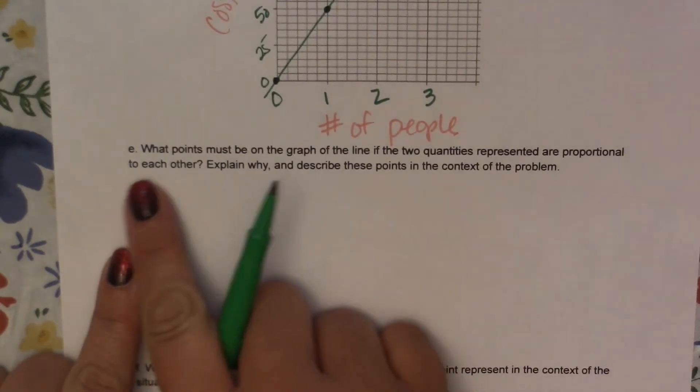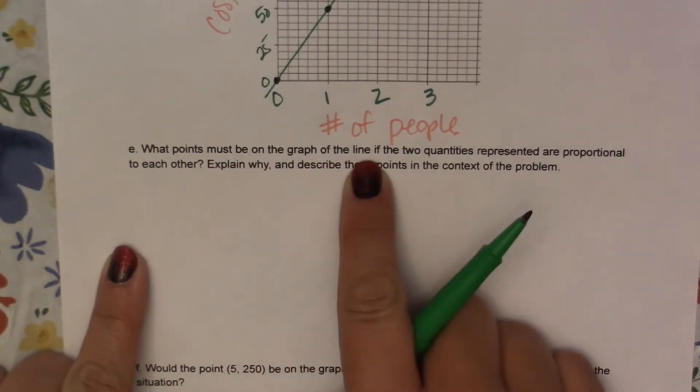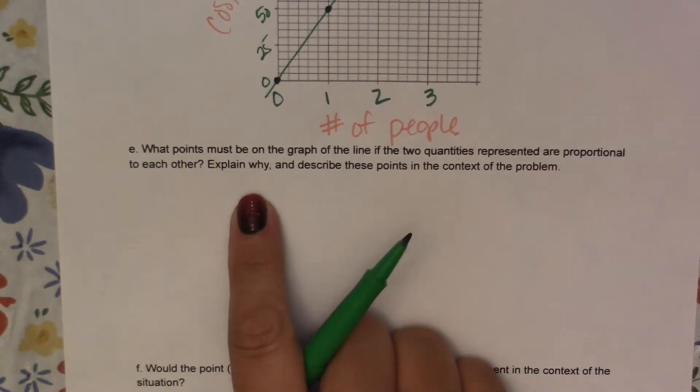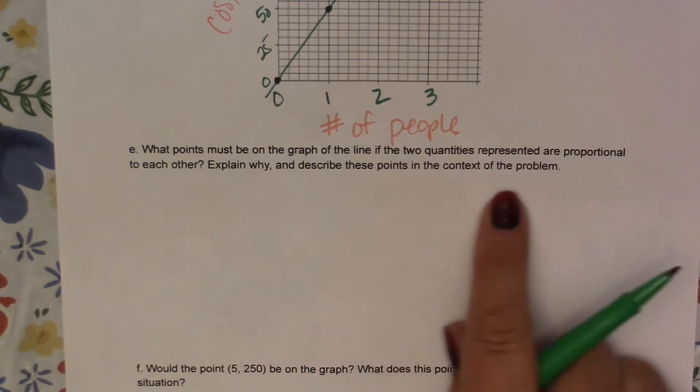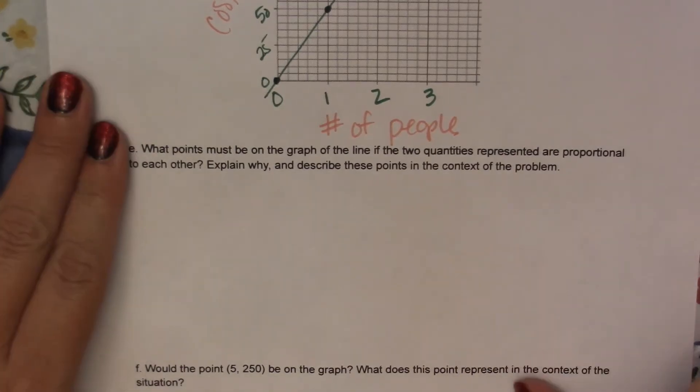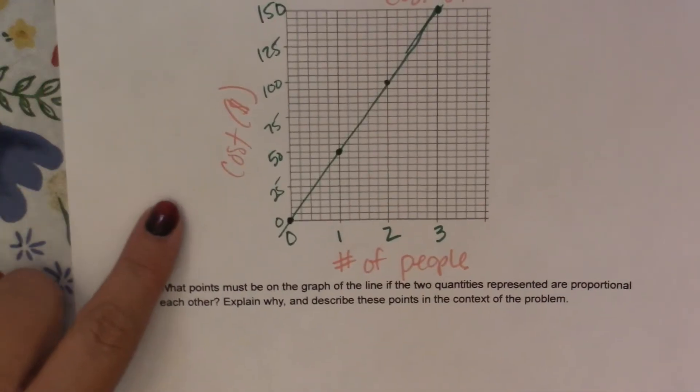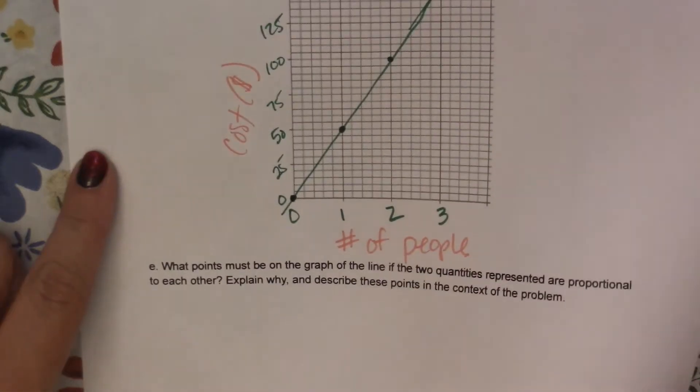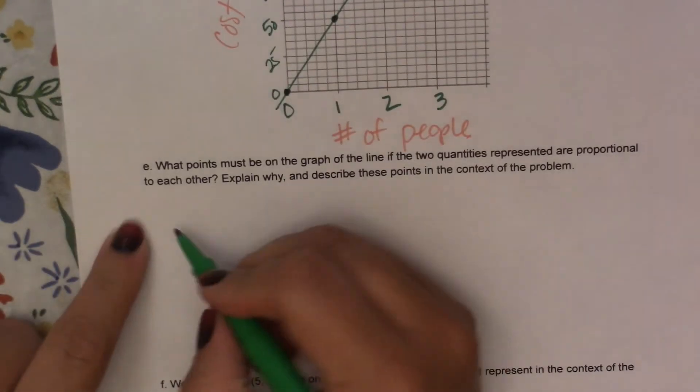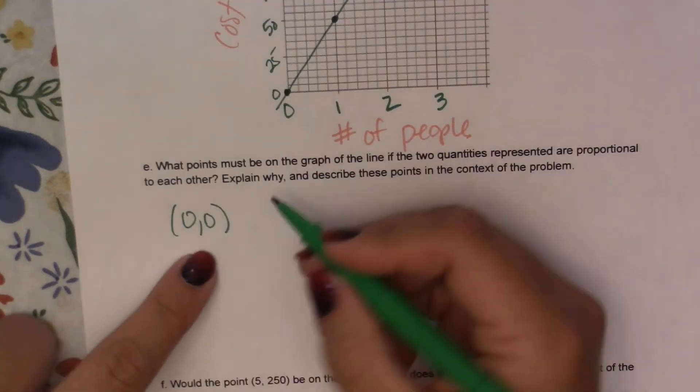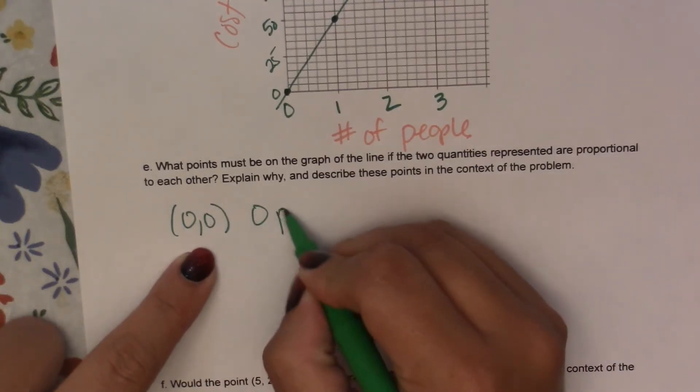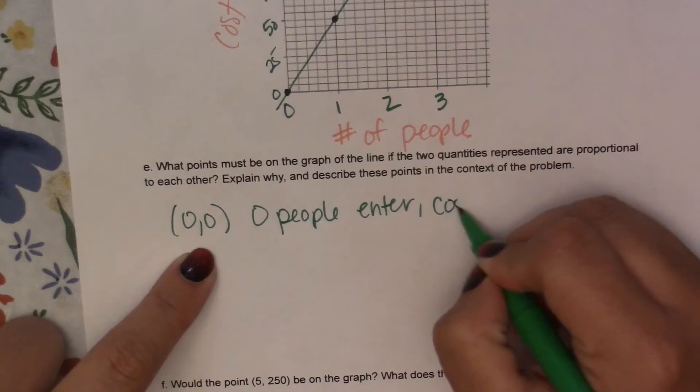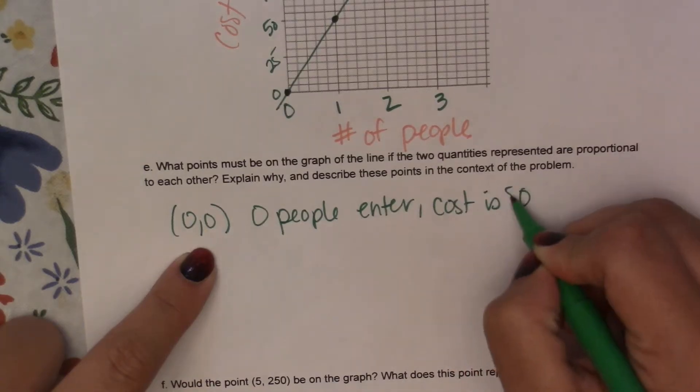What points must be on the graph of the line if the two quantities represented are proportional to each other? Explain why and describe these points in the context of the problem. So if we're looking at a graph, we've already said that one of those points has to be the 0, 0 point. And that's showing us that it is proportional. So 0, 0. And this would be 0 people enter and our cost is 0 dollars.